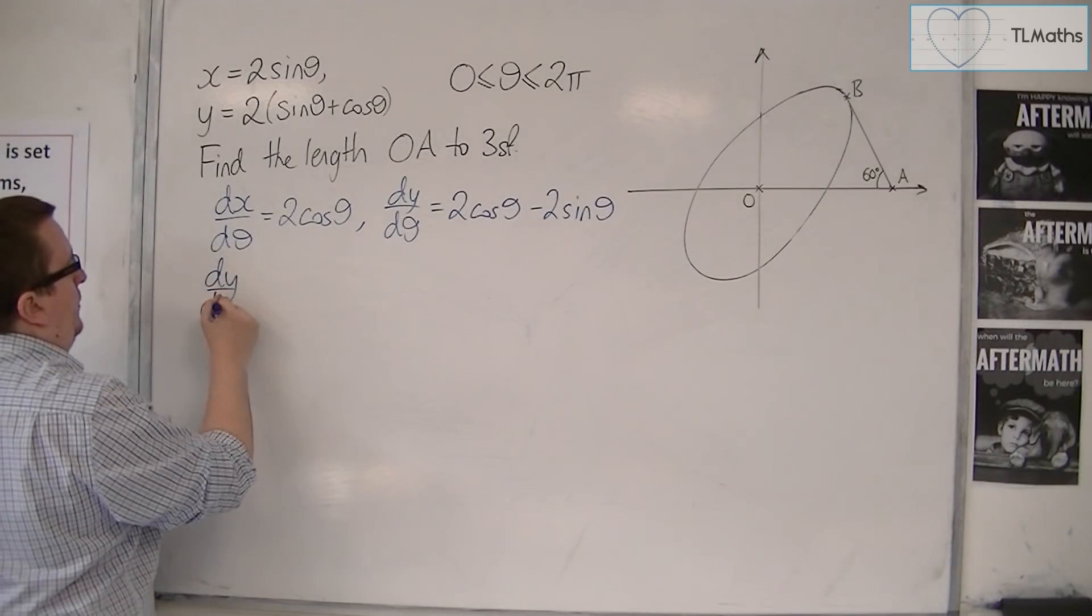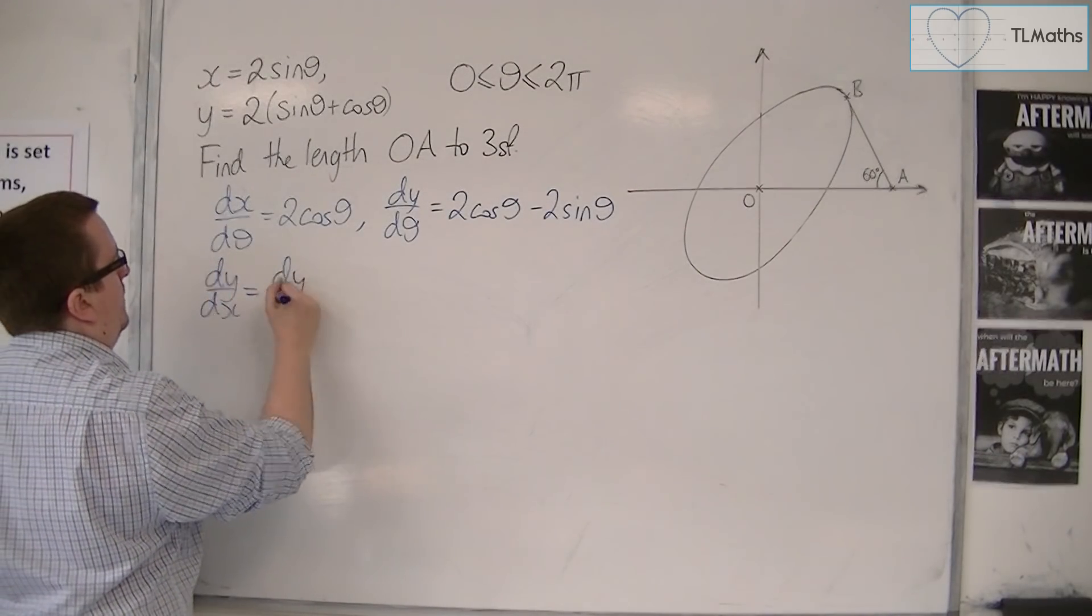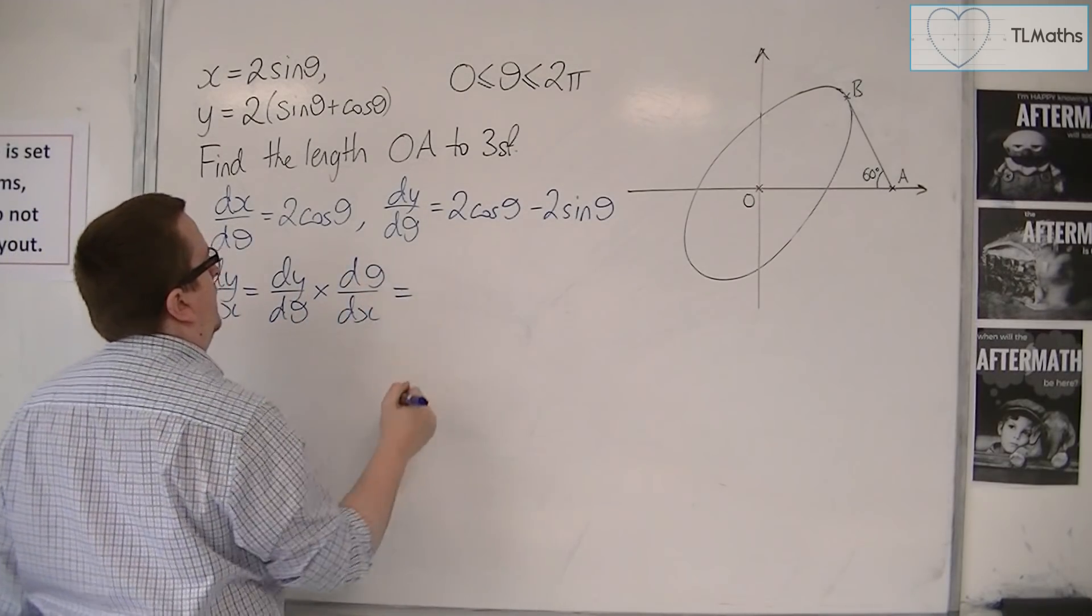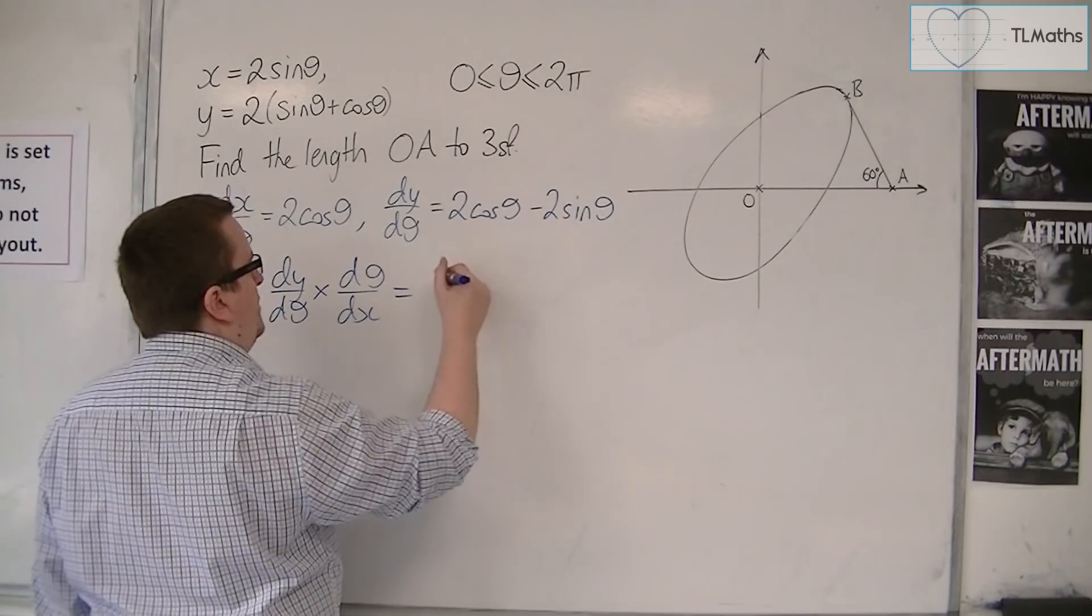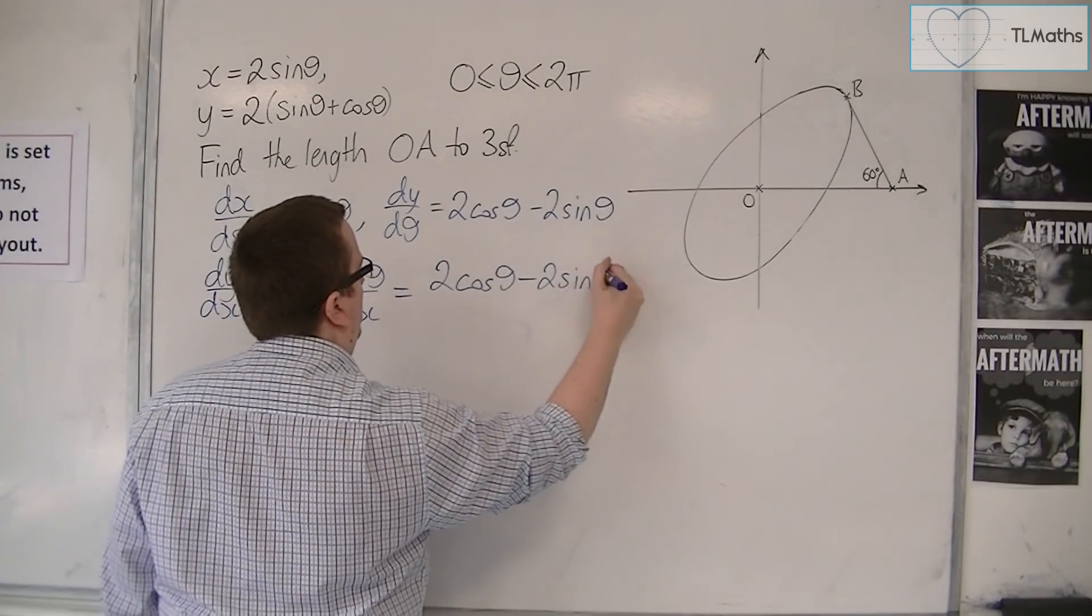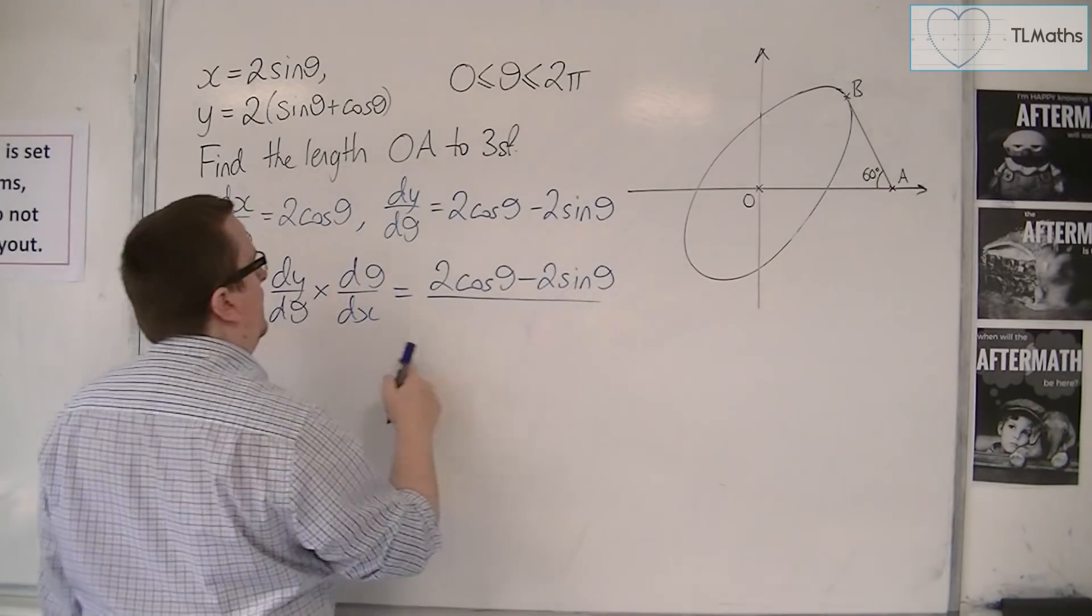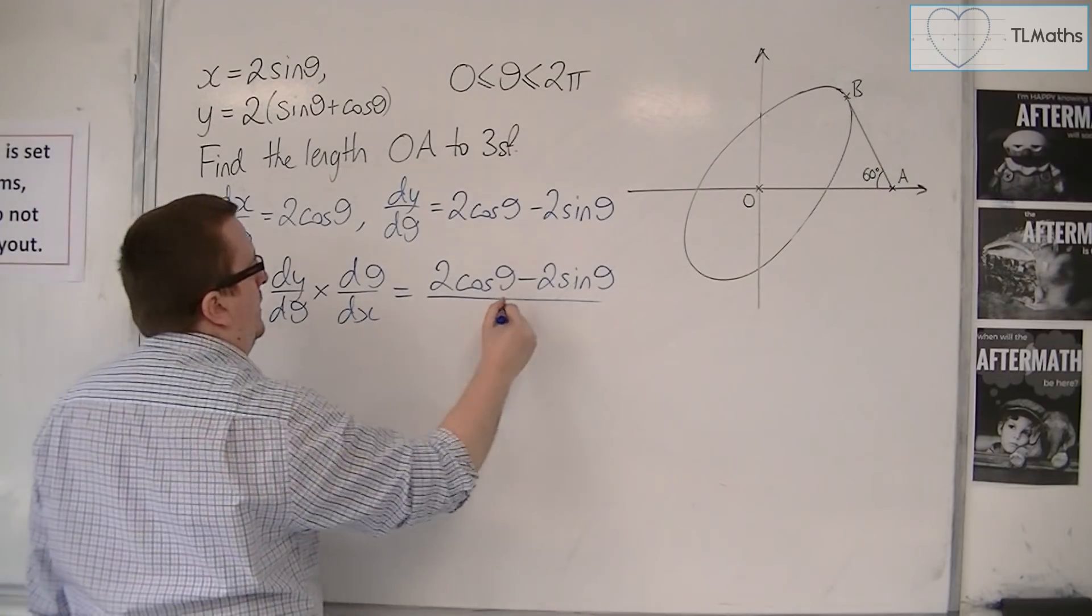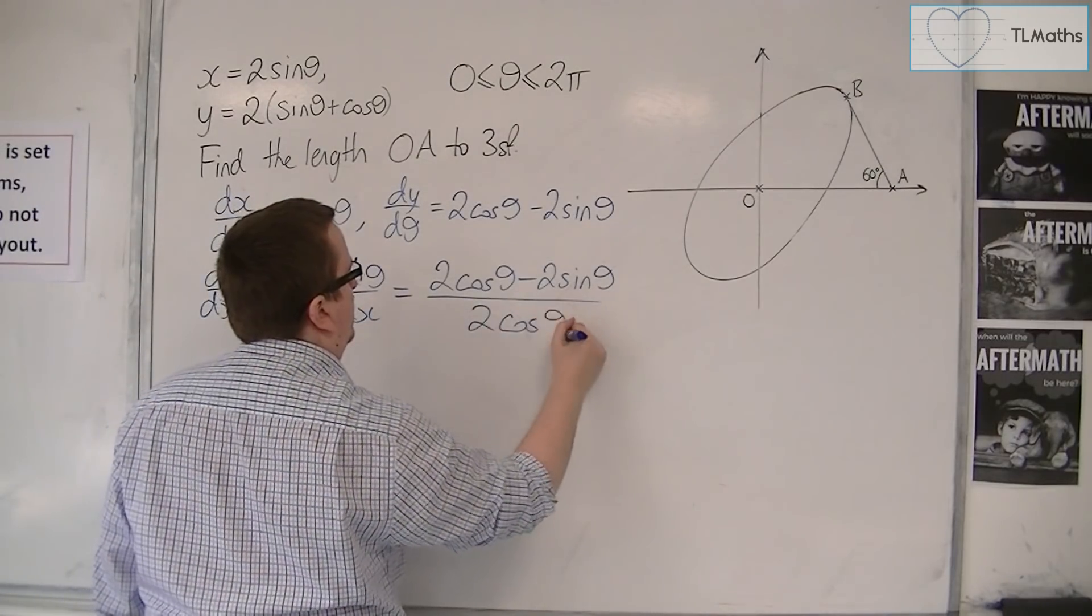dy by dx is dy by d theta times d theta by dx, which is 2 cos theta minus 2 sine theta times 1 over 2 cos theta. They multiply together to make this.